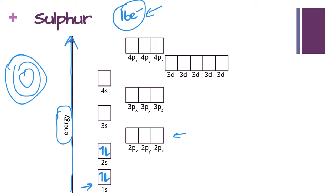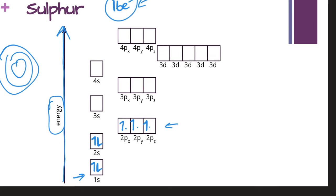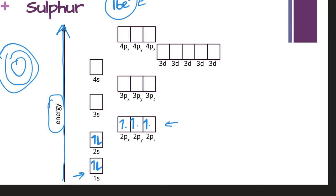Then we get to the 2p orbitals, and here we have three different types: x, y, and z. We're going to put one in each first because one of our rules says that we have to put one in each first before we start doubling up. So that's five, six, seven, and then we go eight, nine, and ten.